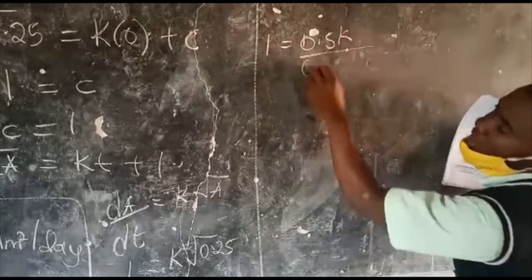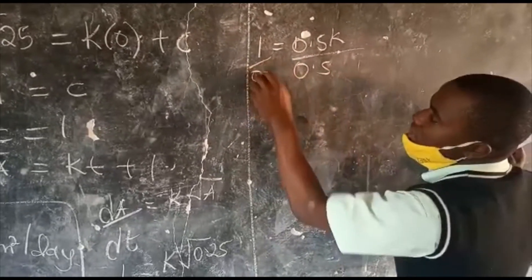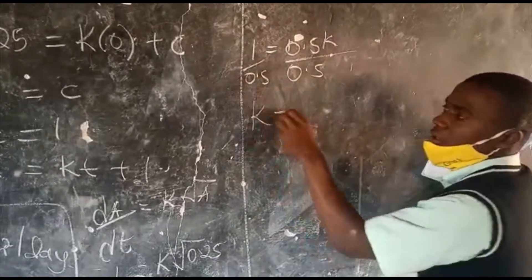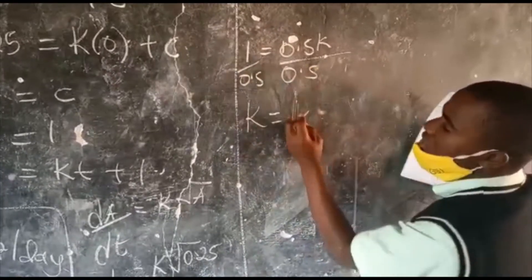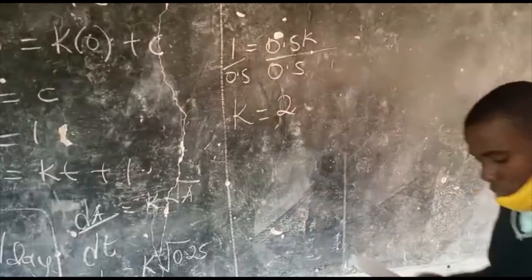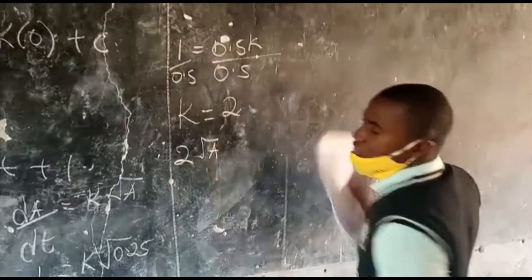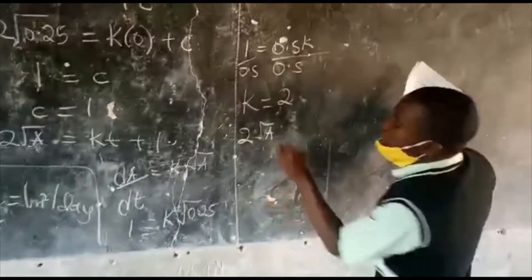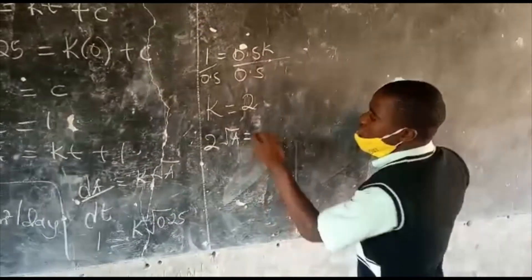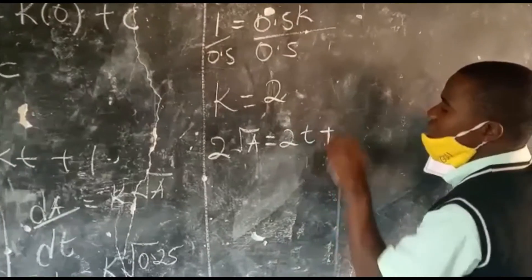I divide through by 0.5, so that my k is 1 over 0.5, which is 2. From there, I have 2 root of A, I substitute the k, I substitute the value for k in the equation, which is 2T plus 1.